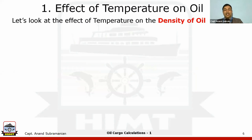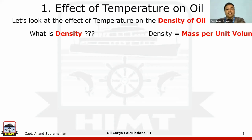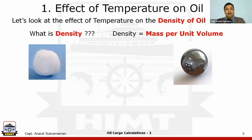Now let us look at what happens to density. The same experiment — before we come into density, how do I define density? Mass per unit volume. Short and sweet, that's the meaning of density. So we have density as mass per unit volume. Let's get the hang of what this density is. I've got a ball of cotton on the left and a stainless steel ball bearing on the right.